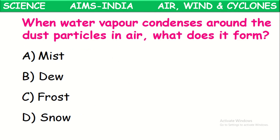Next: when water vapor condenses around the dust particles in air, it forms mist. Mist is formed when water vapor condenses around the dust particles present in the air.